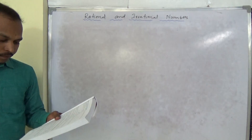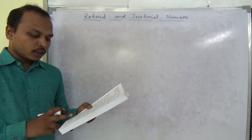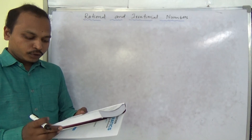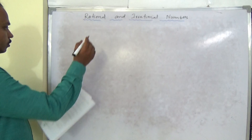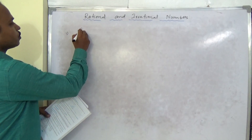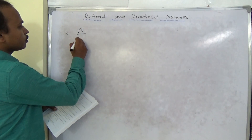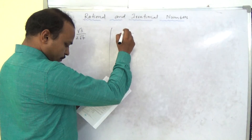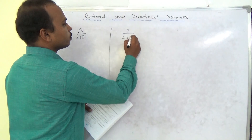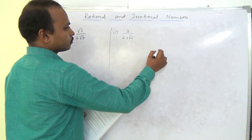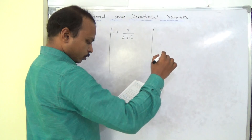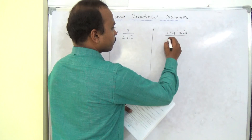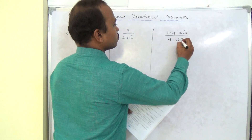Now we will see one example. Rationalize the denominator of each of the following — we will solve three questions. How to rationalize the denominator? First question is √3 by 2√7. Second question is 3 by 2 plus √5. Third question is 4 plus 2√3 by 4 minus 2√3.